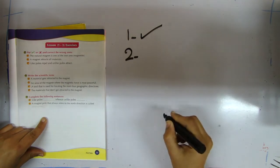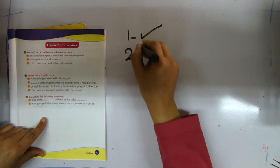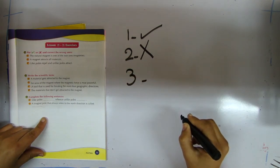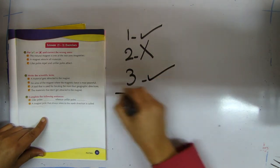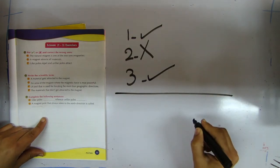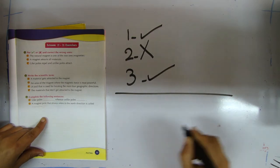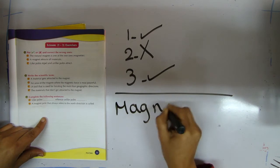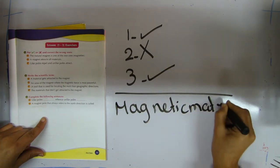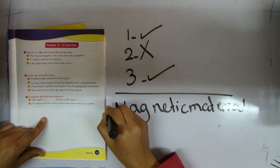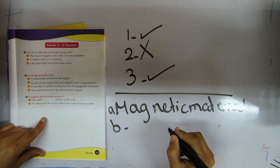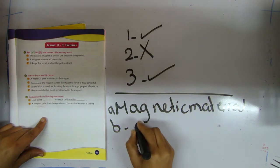Number two: magnet attracts all materials. Wrong — it attracts only some materials. Like poles repel and unlike poles attract. Question number two: write the scientific term. Number one: material that gets attracted to the magnet is magnetic material. Number two: an area of the magnet where the magnetic force is most powerful is the magnetic pole.